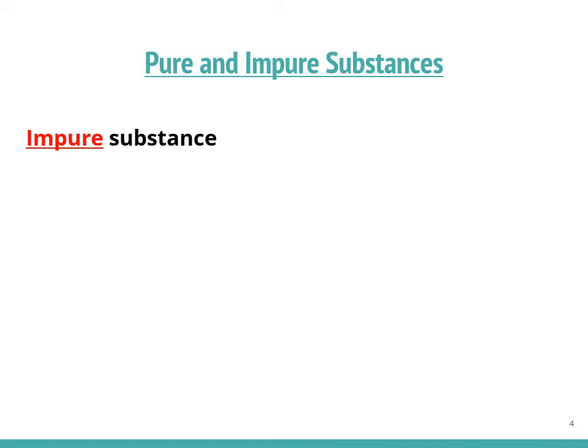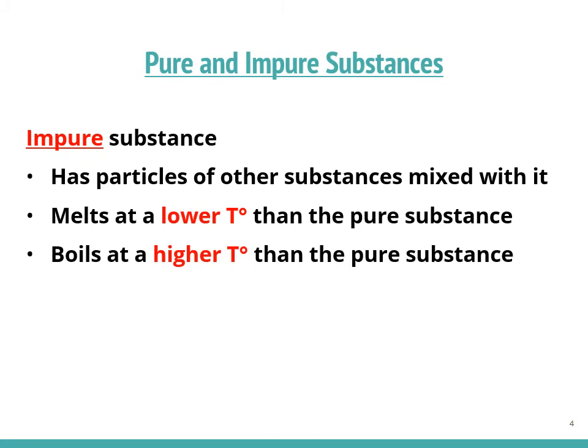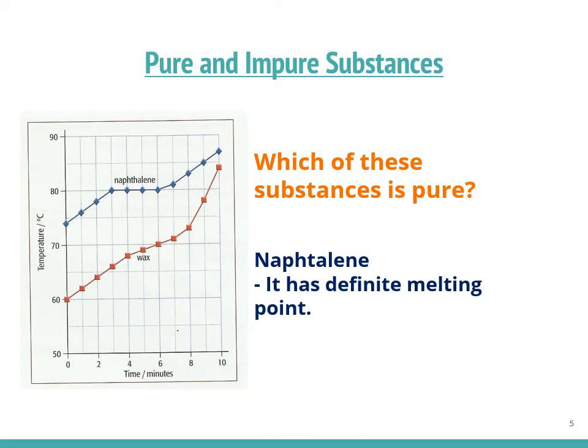What does it mean by impure substance? An impure substance has particles of other substances mixed with it, and contrary to pure substances, it melts at a lower temperature and boils at a higher temperature. For instance, in this example we have the heating curve of naphthalene and wax. Which of these substances is pure? The answer is naphthalene, because it has a definite or fixed melting point.